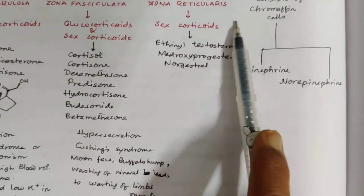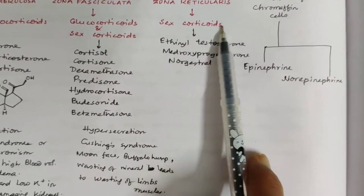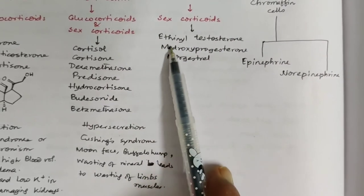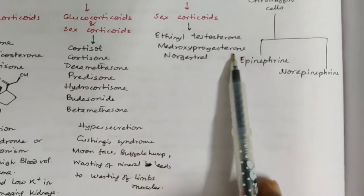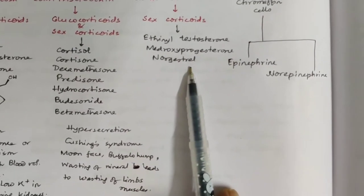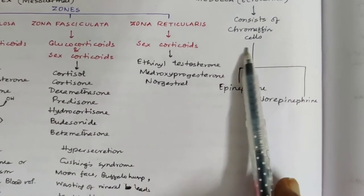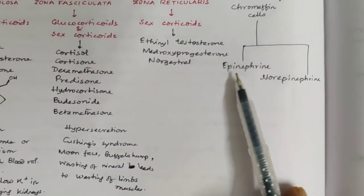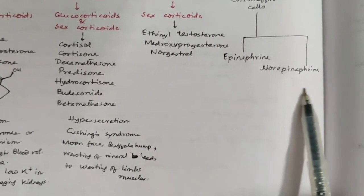Zona reticularis is the innermost layer of the cortex, which secretes sex corticoids like ethinyl testosterone, medroxyprogesterone, and norgestrel. The medulla consists of chromaffin cells, which secrete two types of hormones: epinephrine and norepinephrine, known as catecholamines.